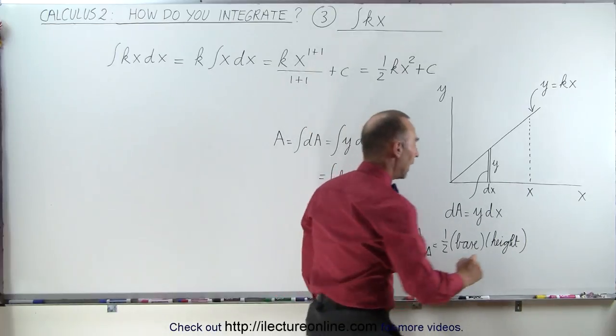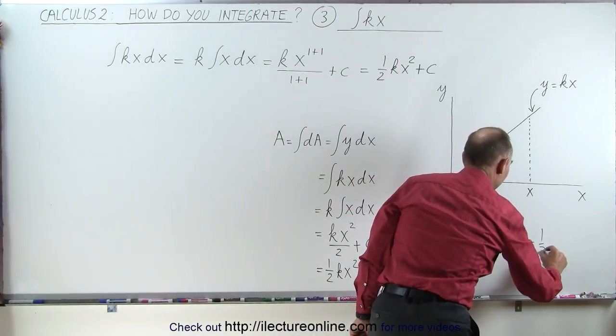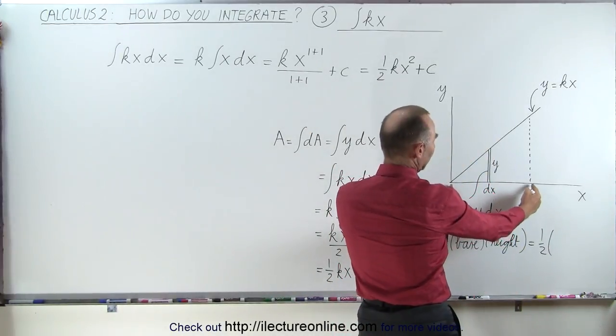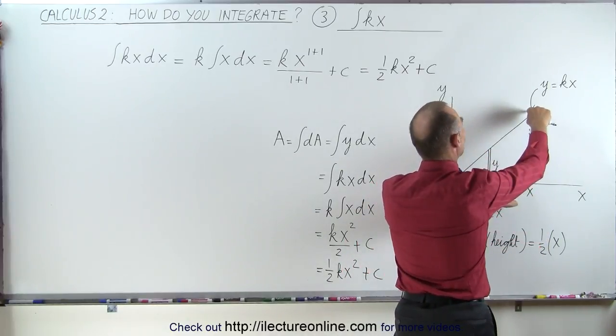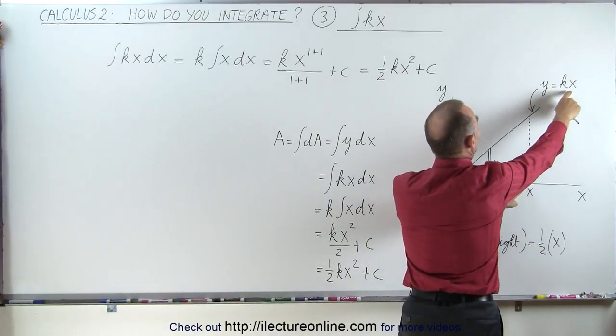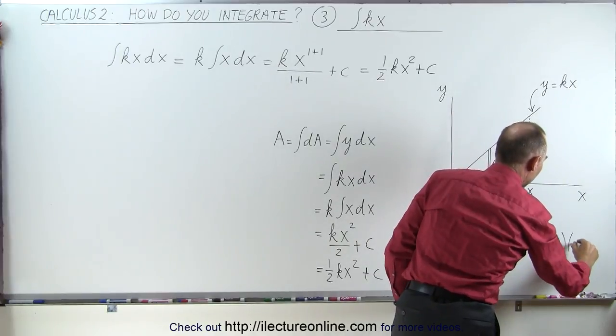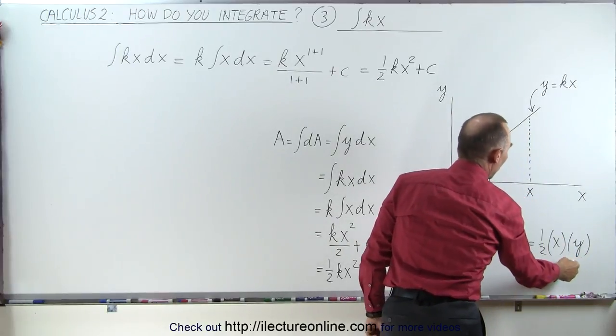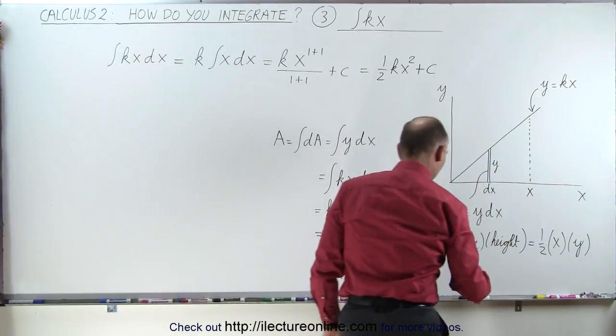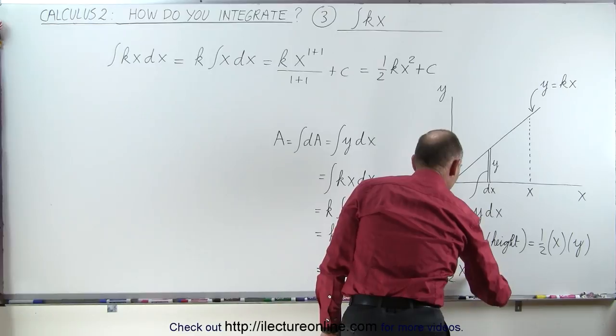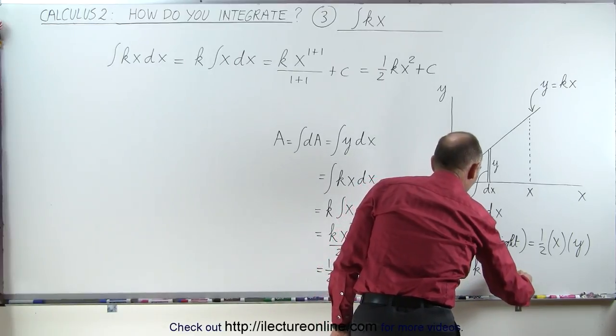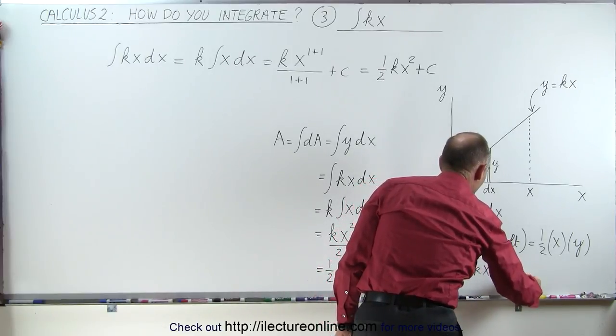And so 1/2 times the base, now the base will be this distance here, which is x, and the height would be the value of y here at x equals x. So the height would be y. And of course, instead of y, we can write kx. So that means that this is equal to 1/2 x times kx, or 1/2 kx squared.